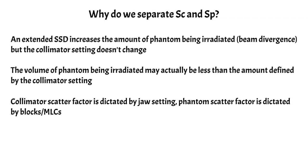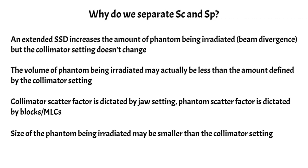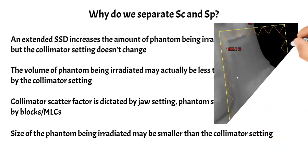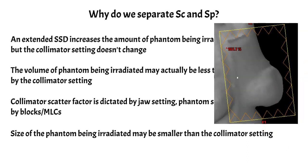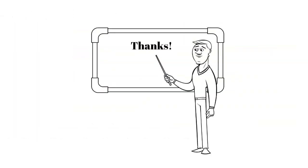Another instance where the field sizes differ is when the size of the phantom being irradiated is smaller than the actual collimator setting. An example is a breast tangent field — you can see that there is really only tissue in part of the field, in which case you would only use the size of that tissue in the field for your phantom scatter factor. This is another example of why we need to separate these two factors. And that's all I have on scatter factors — I will see you in the next video.